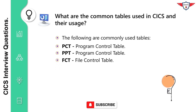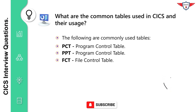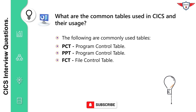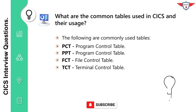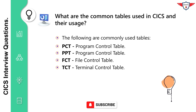File Control Table (FCT) — it contains a list of files known to CICS, the dataset name and status, that is, closed or open, enabled or disabled. Terminal Control Table (TCT) — a list of the terminals known to CICS.